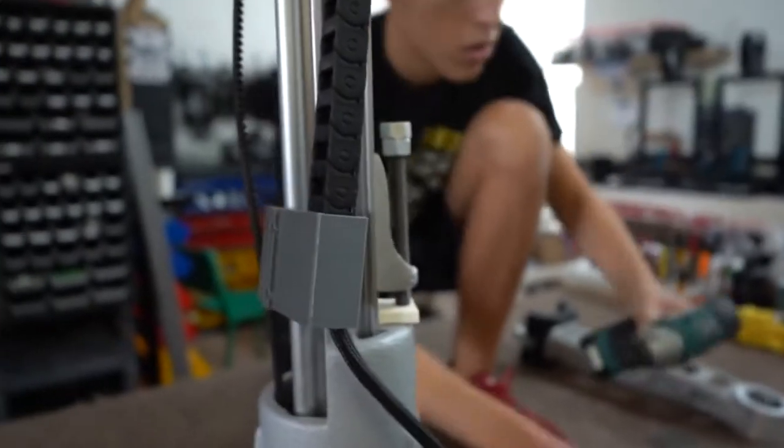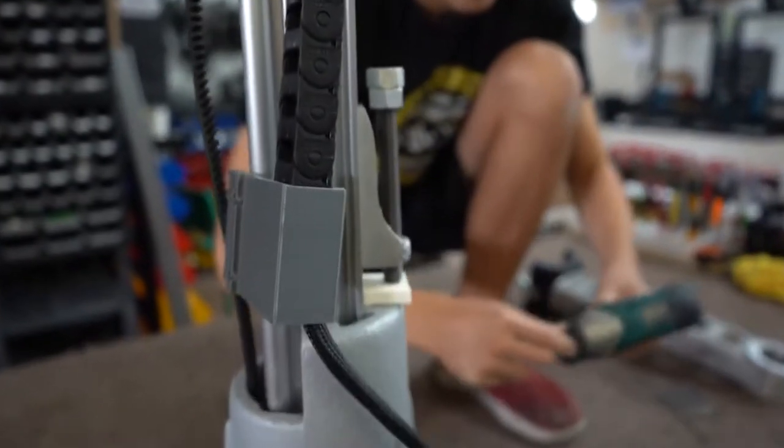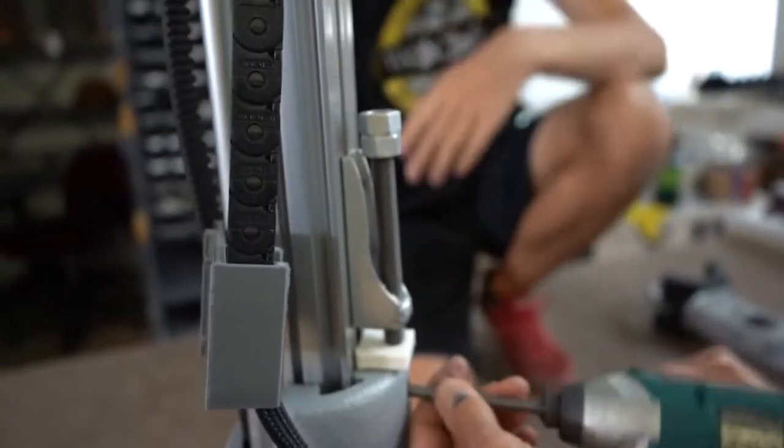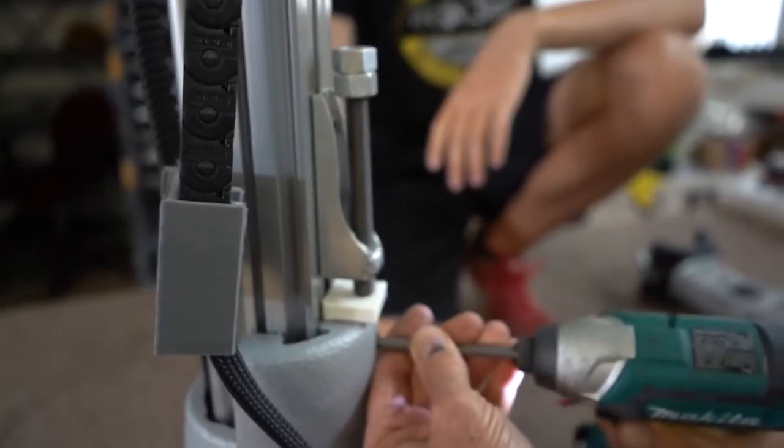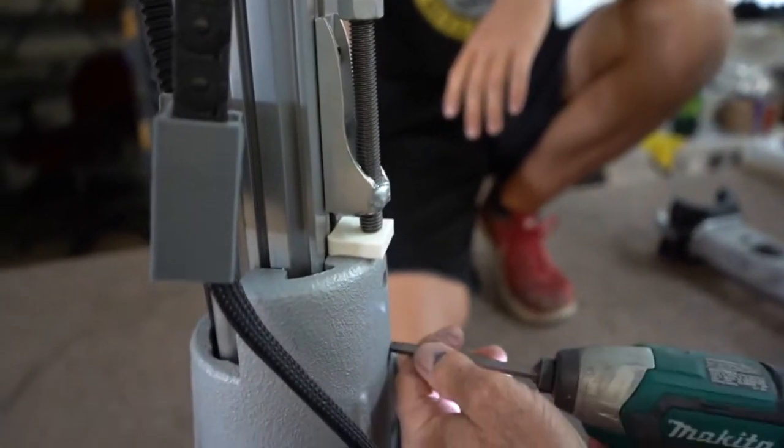If tightened before, loosen the screws on the back of the machine. Do not take them out all the way. Just make them loose enough to move the rail up and down.